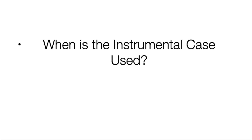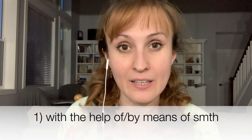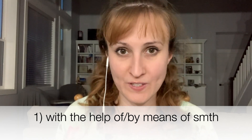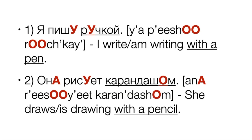Let's start! When is the instrumental case used? Its primary meaning is 'with the help of something.' Look at these two sentences. Number one: Я пишу ручкой — I write with a pen. Number two: Она рисует карандашом — She draws with a pencil. The actions are made with the help of a pen and a pencil, which are used in the instrumental case in these two sentences.